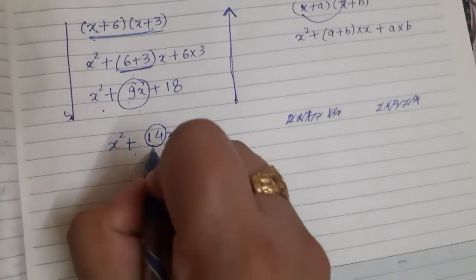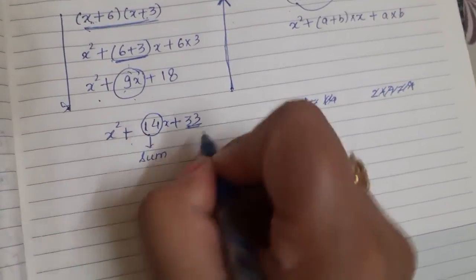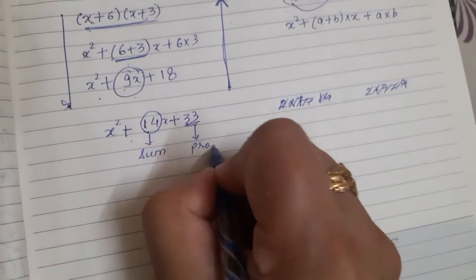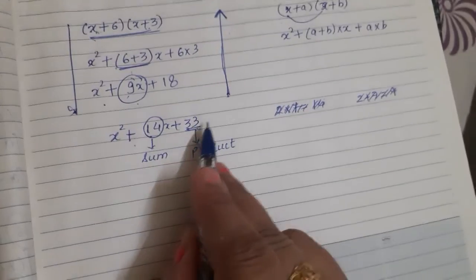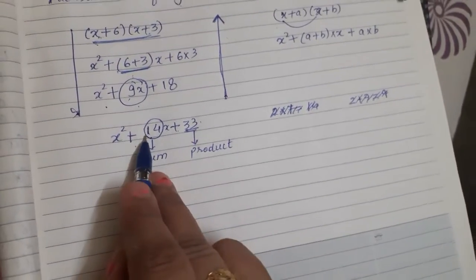Kids, this is known as the sum and this is known as the product. We have to search 2 numbers whose product will be 33 and sum will be 14.